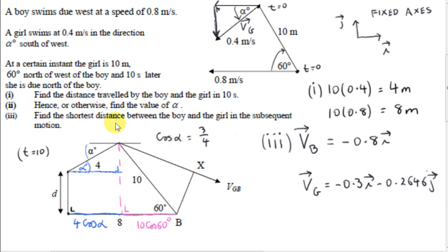Now, in part 3, we want the shortest distance between the boy and the girl in the subsequent motion. So this kind of problem we covered in a previous video. And to answer it, we need to get the relative velocity vector. Now, it doesn't matter whether we get the velocity of the girl relative to the boy, VGB, or we get the other one, the velocity of the boy relative to the girl. I'll work with this one here.